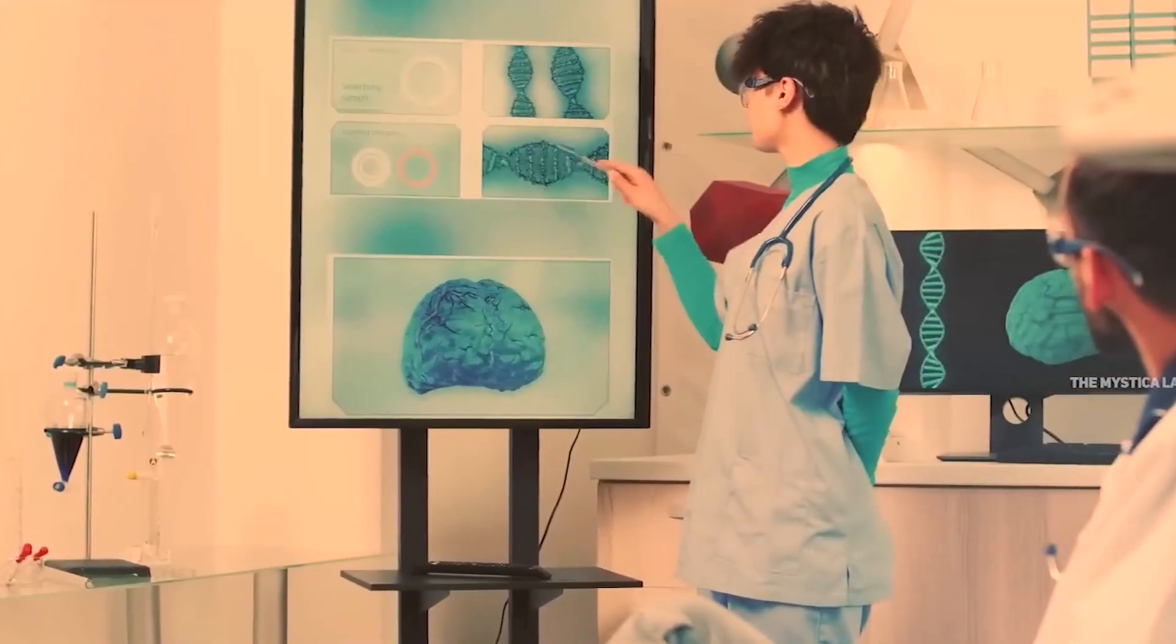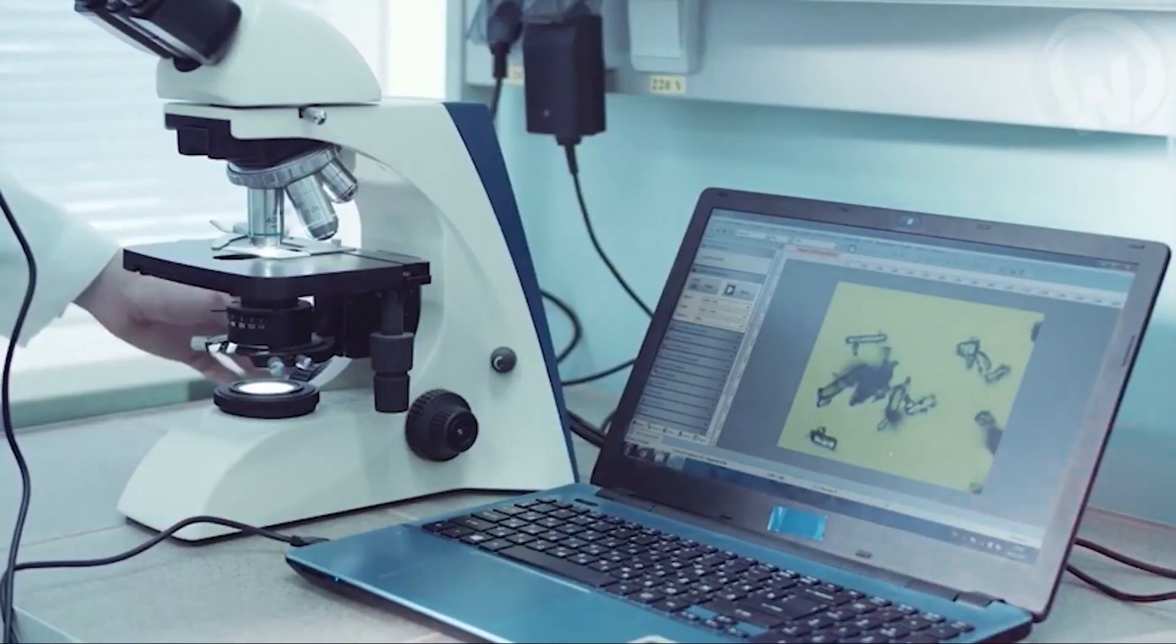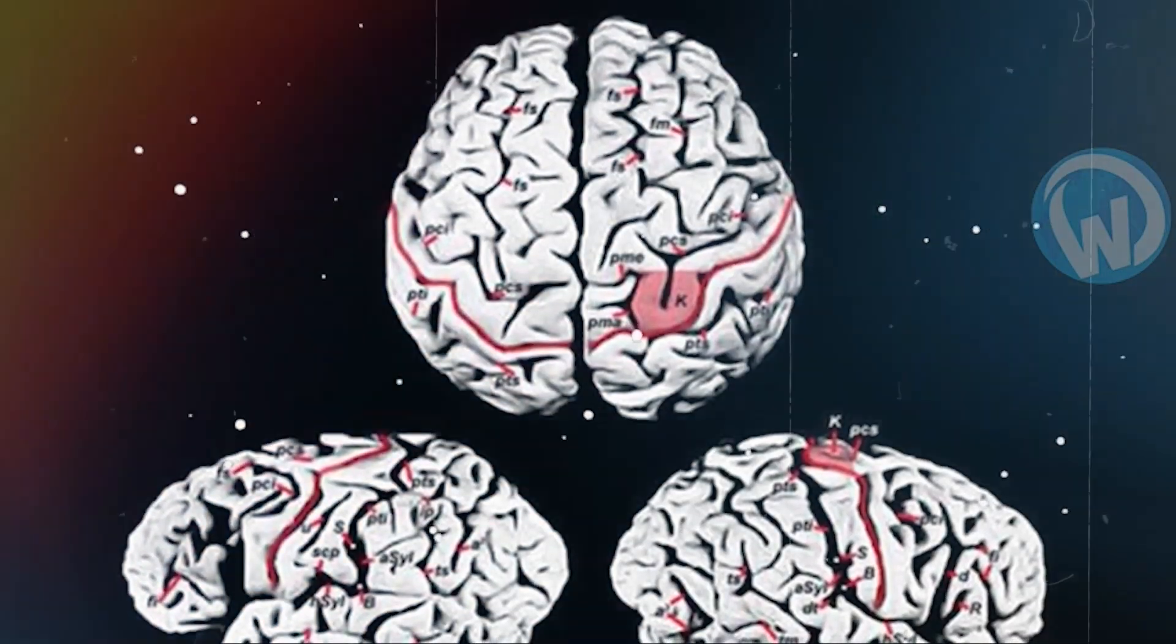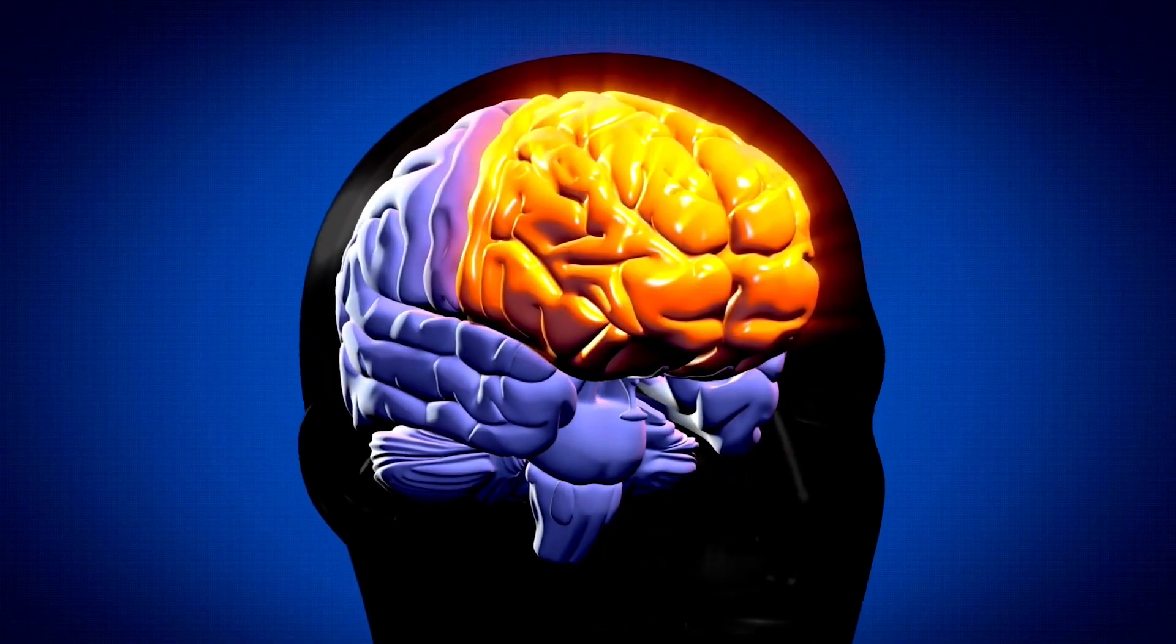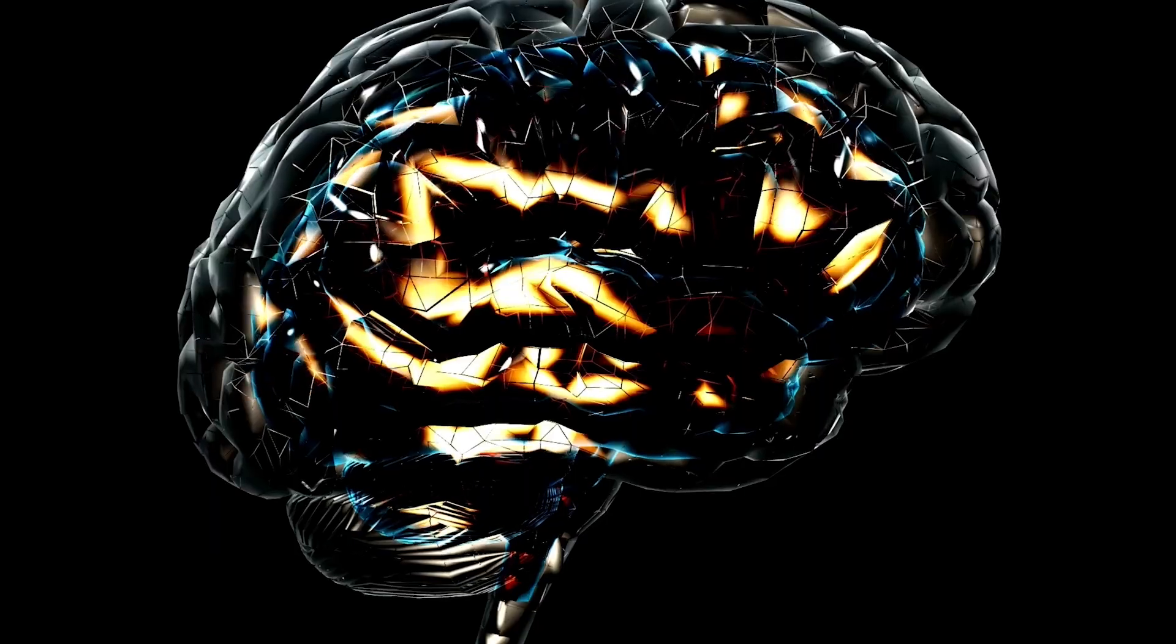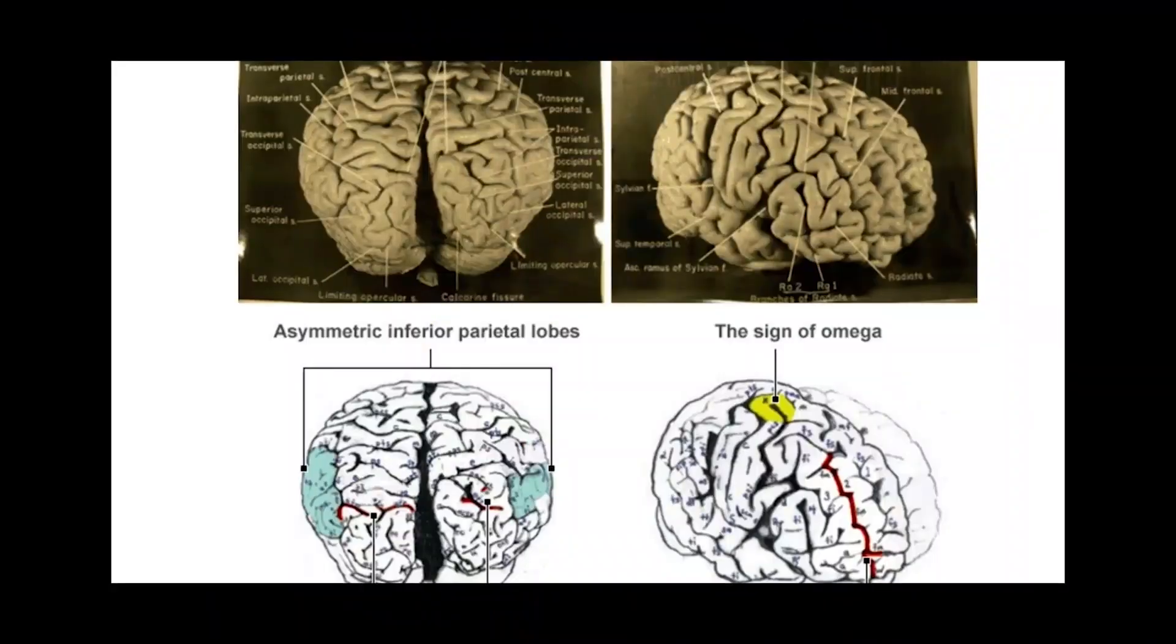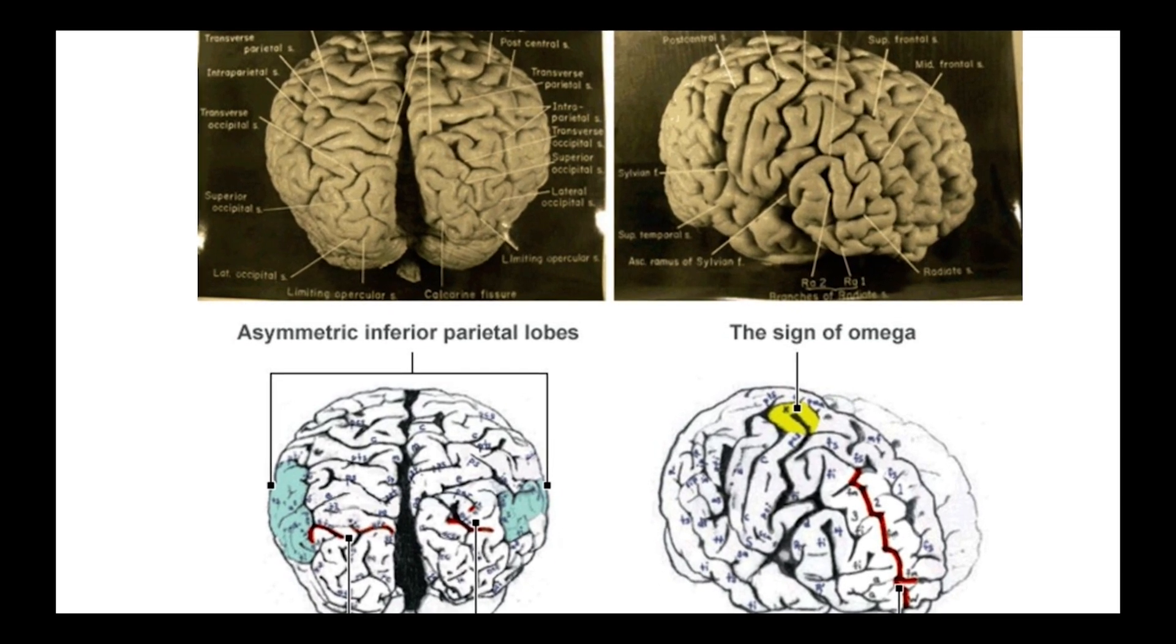As they closely studied the images, Falk and her team found a remarkable feature within Einstein's prefrontal cortex: an unusually complex pattern of folds and creases. This part of the brain, essential for abstract thinking, had a unique structure unlike that found in most individuals. It was as if Einstein's brain possessed a map of genius etched into its very anatomy.